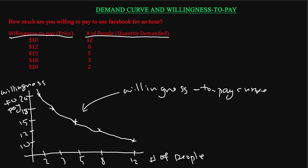What is the relationship between this curve and the demand curve? The willingness to pay curve is the same as the demand curve. You can think of willingness to pay as the maximum price each person sampled said they are willing to pay to use Facebook for one hour. This willingness to pay is the same as the price, and the number of people is equivalent to the quantity demanded.